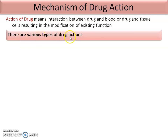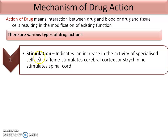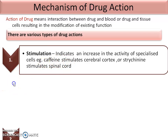There are various types of drug actions. The first one is stimulation. Stimulation indicates an increase in the activity of the specialized cell. Example: caffeine stimulates the cerebral cortex, or treacherin stimulates the spinal cord. This stimulation action is for specialized cells, not all cells.